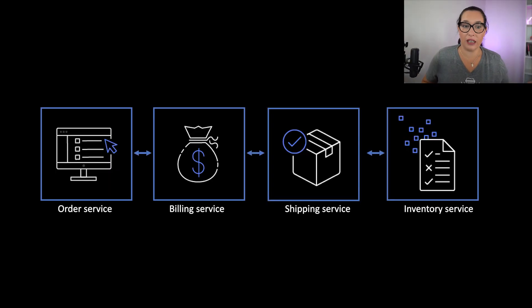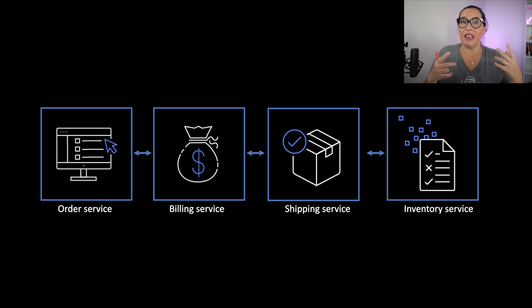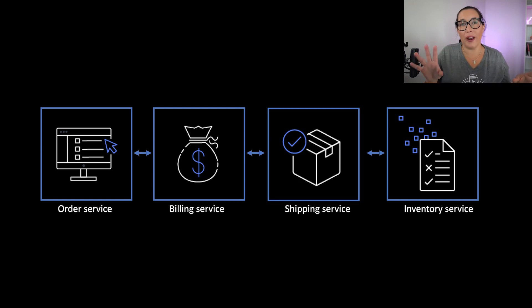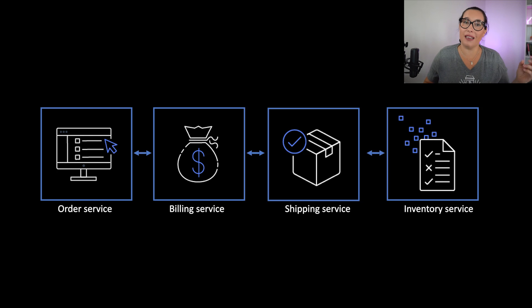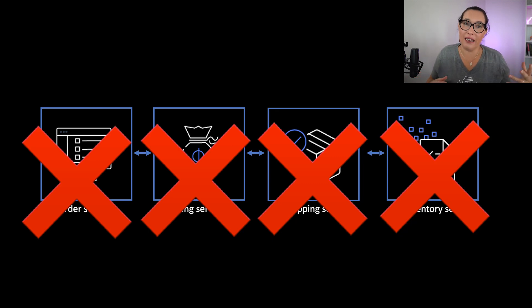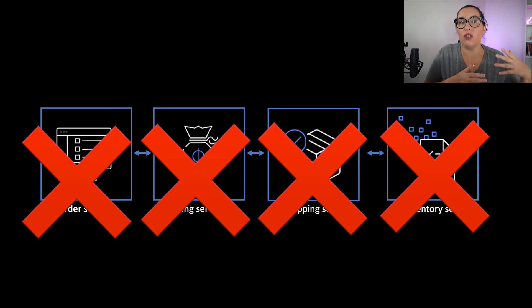Let's look at an example using an e-commerce application. We have the order service, the billing service, the shipping service, and the inventory service — everything needs each other. In this tightly coupled case, the order service is waiting for the billing service, the shipping service is waiting for the inventory service, and so on. If there is a problem in the inventory service and it goes down, everything goes down with it because everything is so highly coupled — one problem impacts the whole pipeline and customers will see the failure.